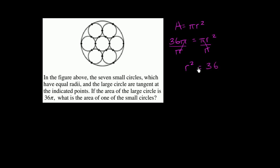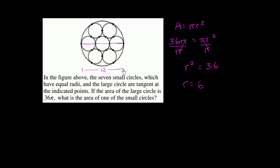Now, if you were just solving an equation, r squared equals 36, you would get that r is equal to plus or minus 6. But we're talking about a length here, so we only want the principal root of 36. So the radius of the larger circle is 6. Another way to think about it is the diameter of the larger circle is going to be 12 — diameter is twice the radius. So if we go all the way across, that whole distance is 12.